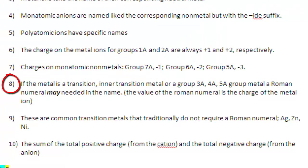If the metal is a transition metal, or group 3A, 4A, 5A metal, a Roman numeral may be needed. The value of the Roman numeral is the charge of the metal ion.